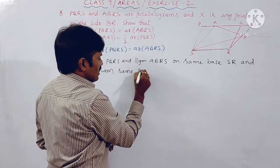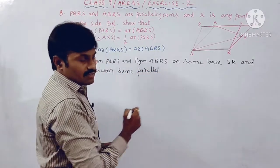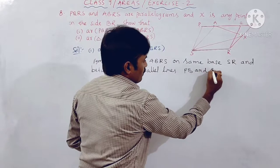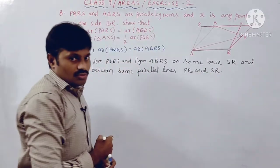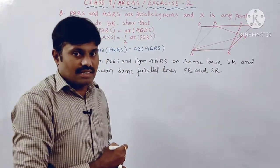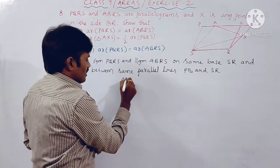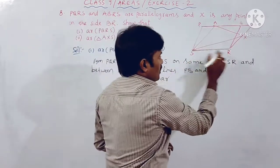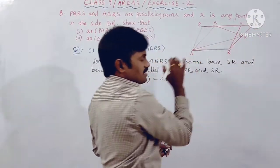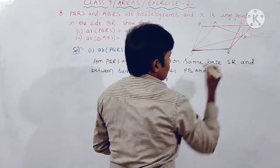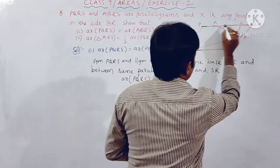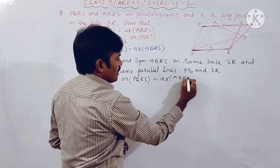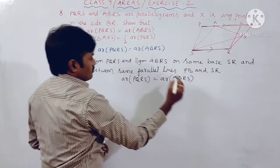Both parallelograms are on the same base SR and between the same parallel lines PB and SR. Therefore, area of parallelogram PQRS is equal to area of parallelogram ABRS, since both are on same base SR and between same parallel lines PB and SR. Hence, first part is proved.